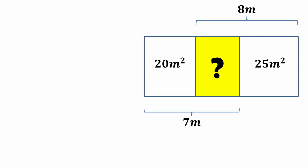There are three rectangles. The area of two rectangles are given and we have to find the area of the middle rectangle. Let the width of the yellow rectangle be X. Then the width of the first rectangle will be 7 minus X.